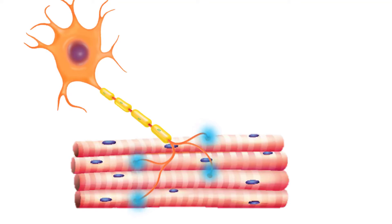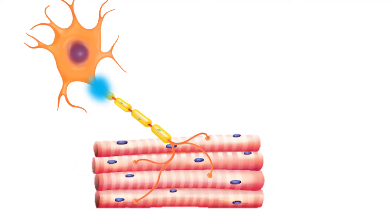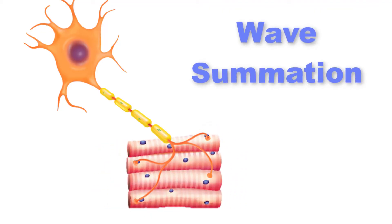If the fibers are stimulated while a previous twitch is still occurring, the second twitch will be stronger. This response is called wave summation.